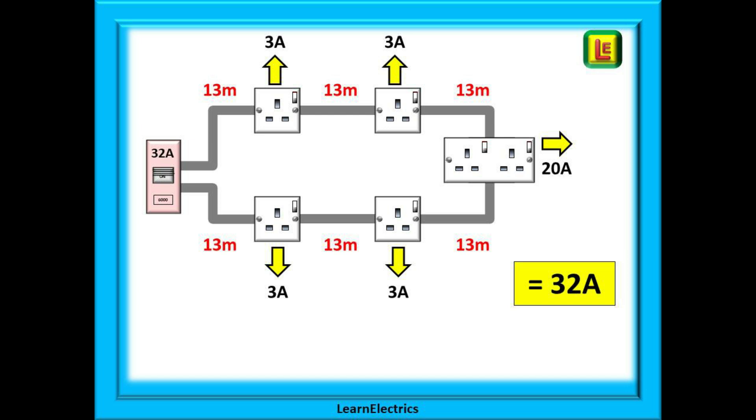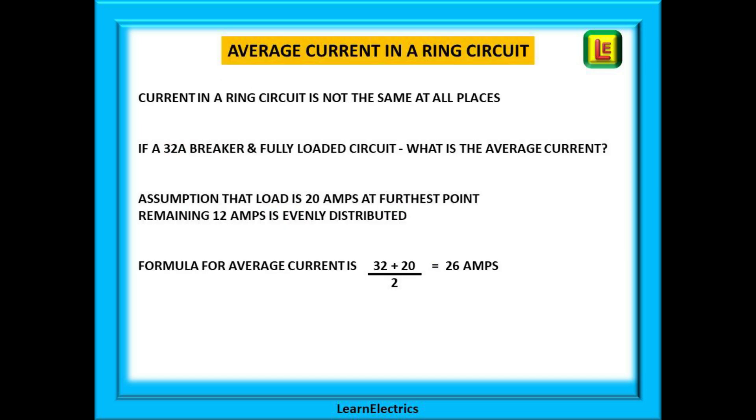If we add this up we have a total loading of 32 amps and this is our IB. But the design regulations permit us to make allowances for the fact that not every piece of cable will be fully loaded.